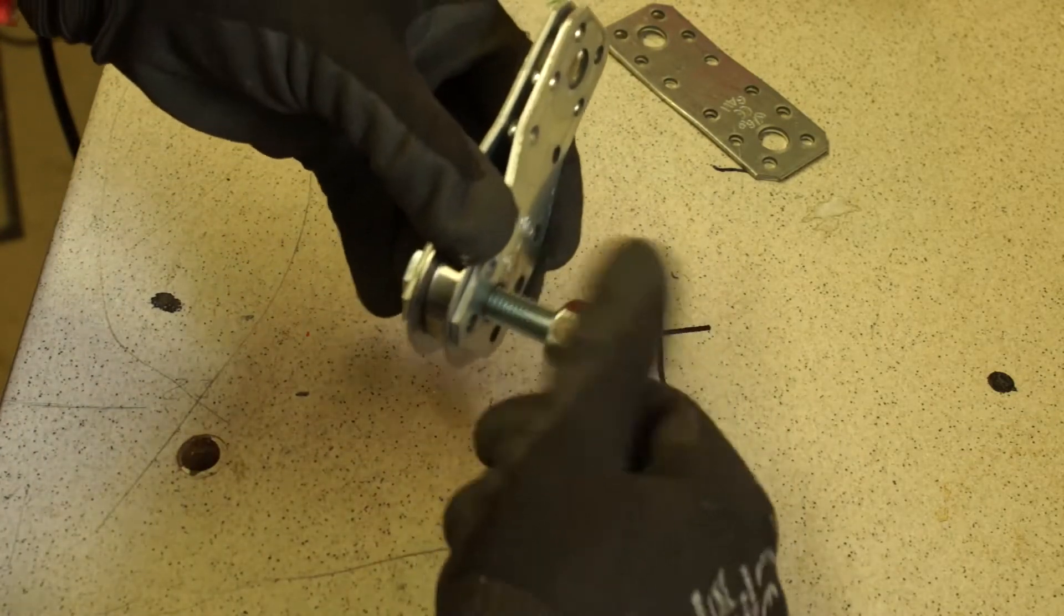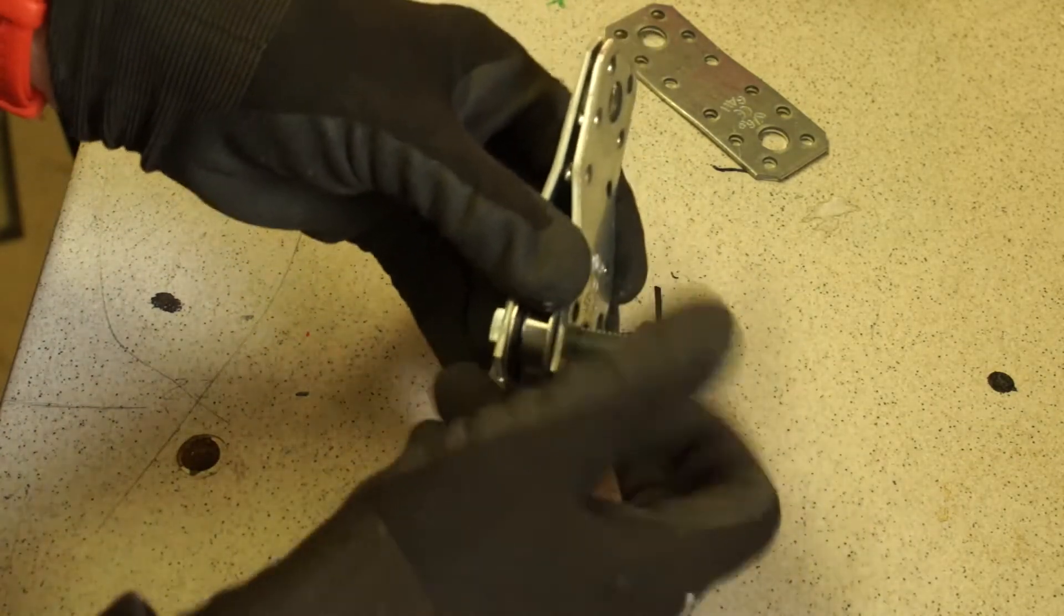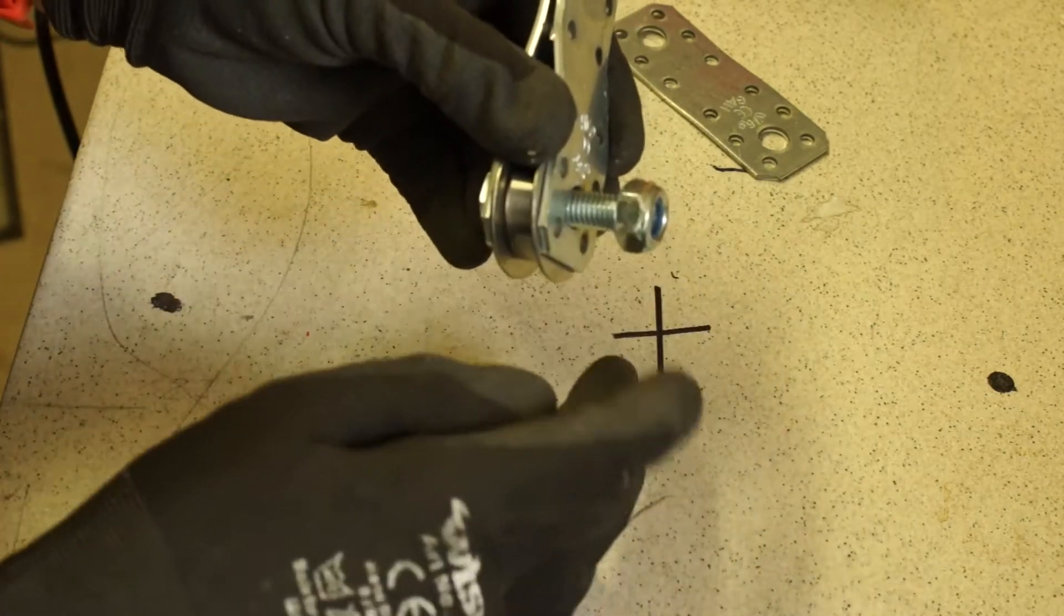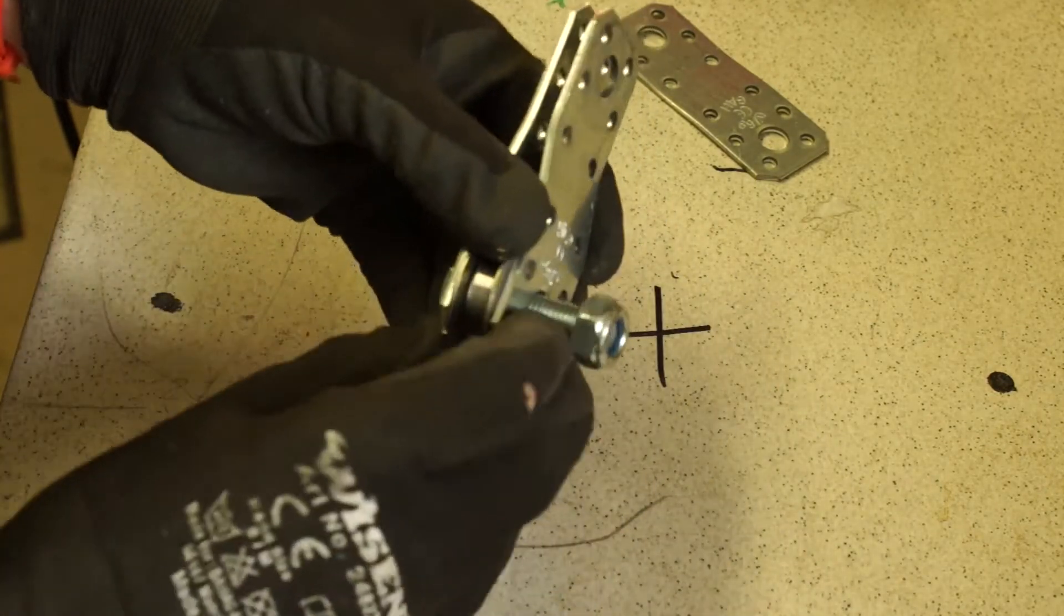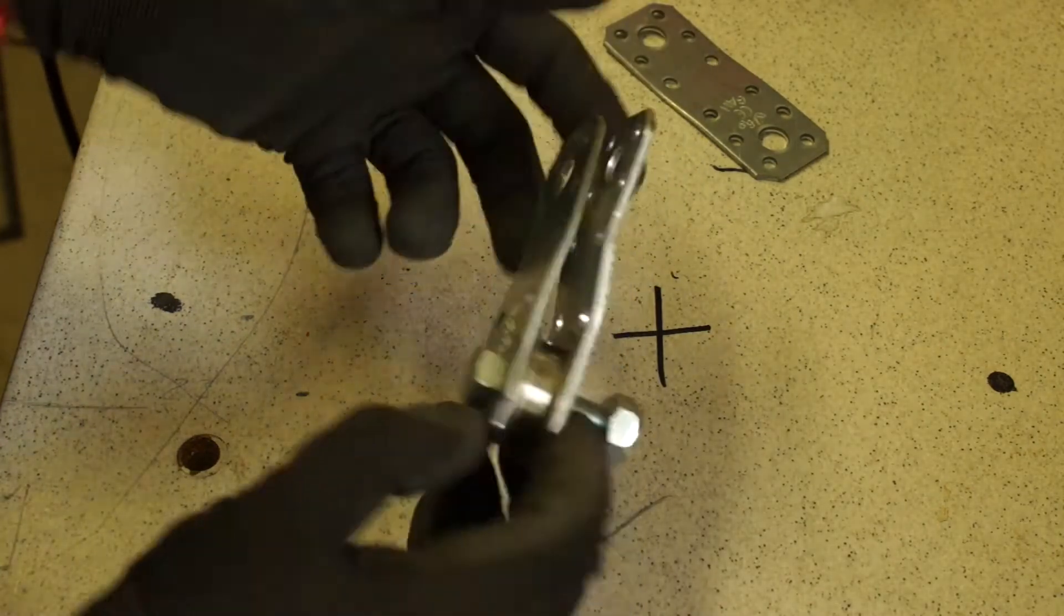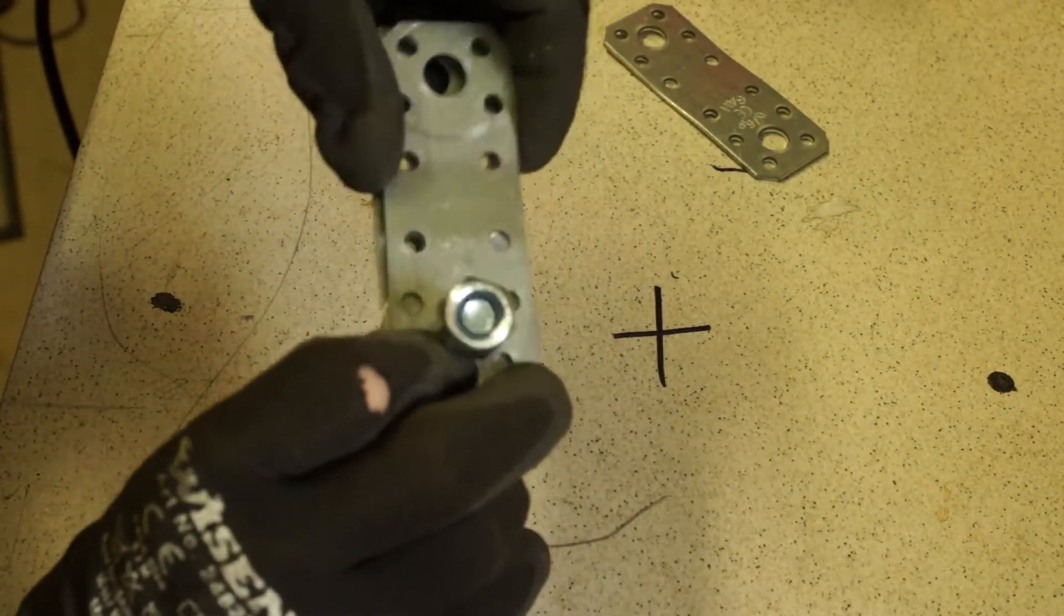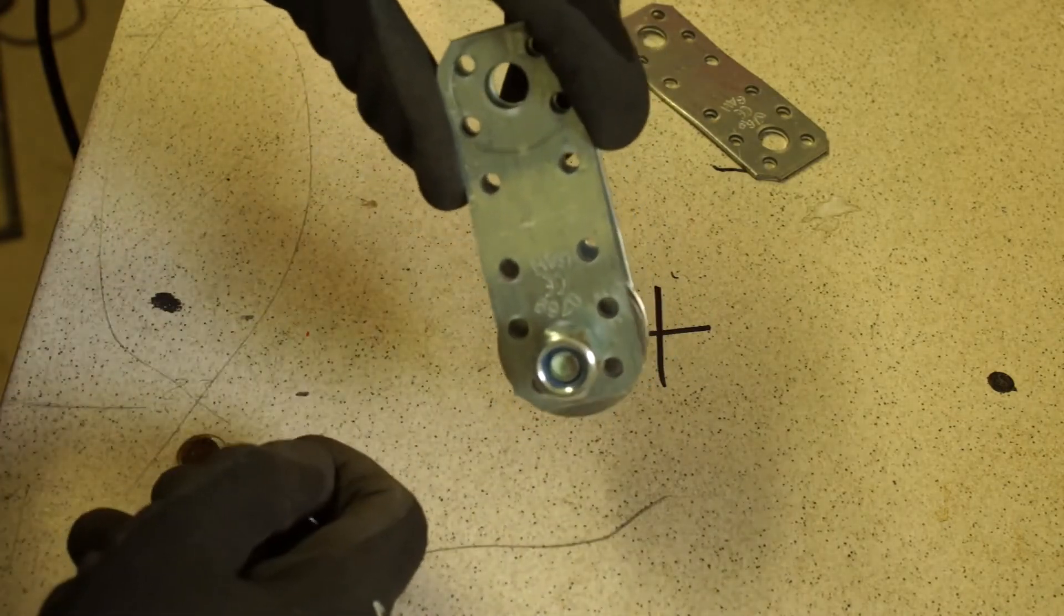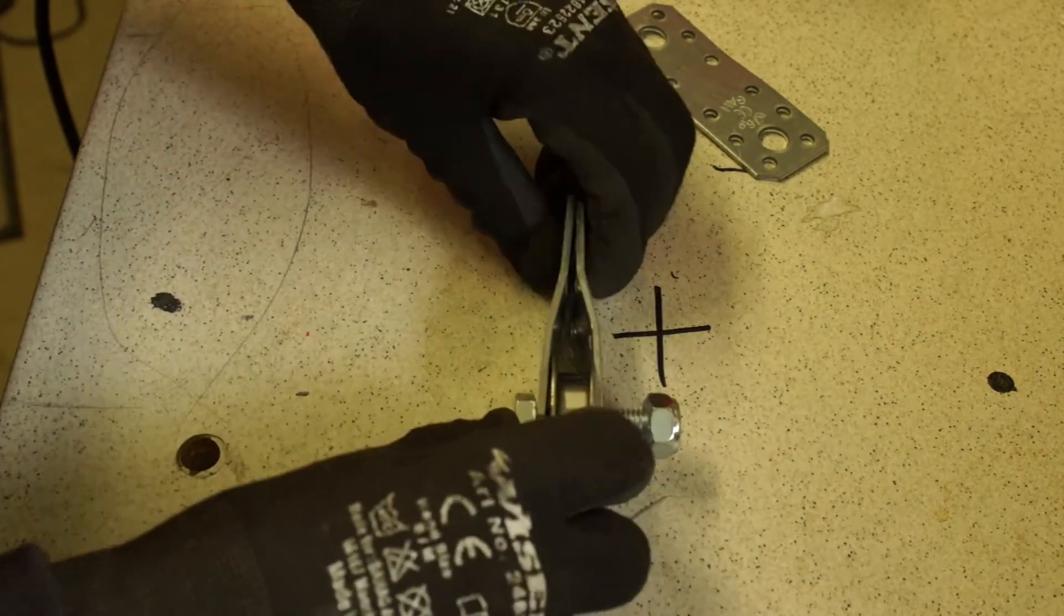So after that we could screw on the nut and saw through the axle and we are done. But right now I will do two other holes right here because we need this to get a security rope through there. It's a special construction.